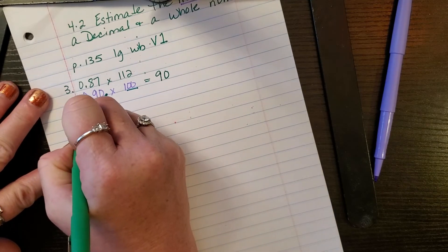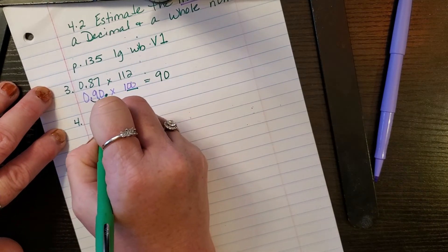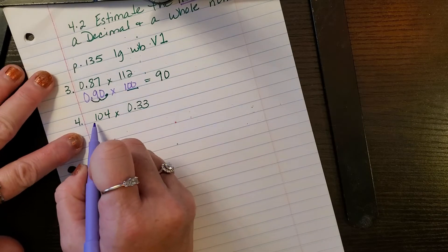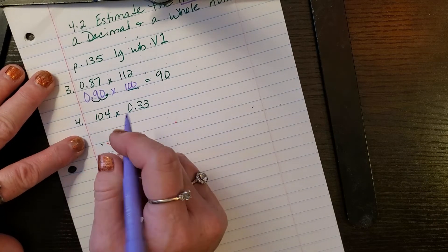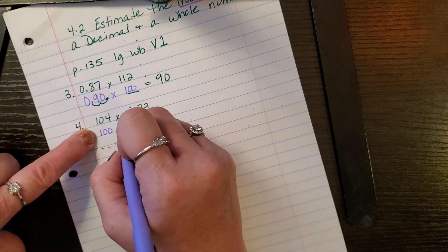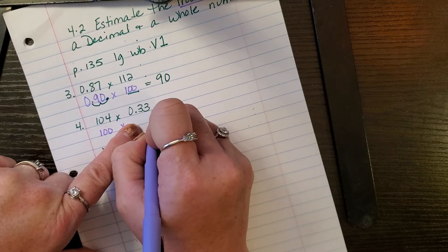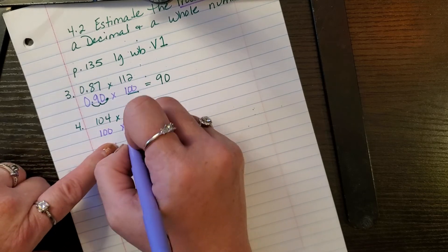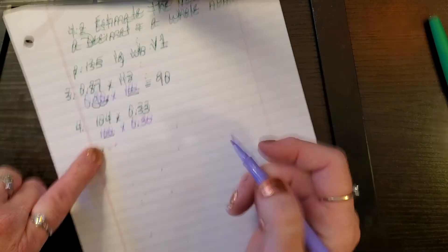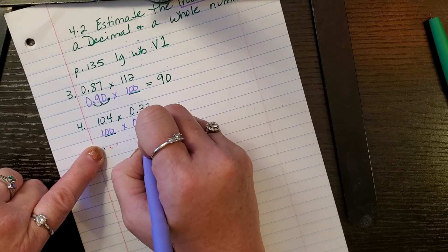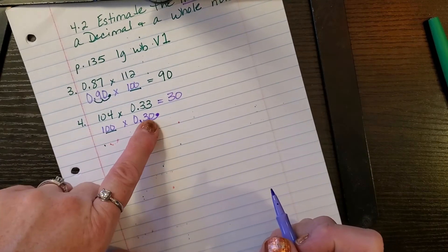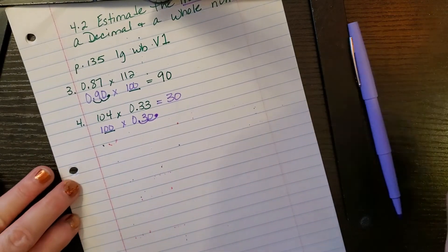Number four: 104 times 0.33. What is 104 close to that I can easily multiply by that has zeros behind it? Well, it's close to 100. So I'm going to change to 30 because again, I'm looking for those zeros. So I'm going to do 0.30. Now this tells me I need to move that decimal place two spaces bigger. So I'm going to go this way. And now this equals 30.